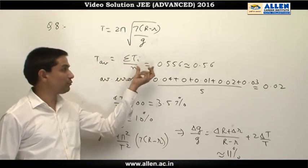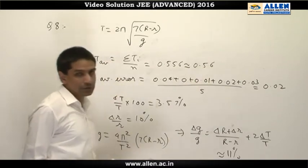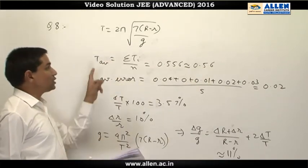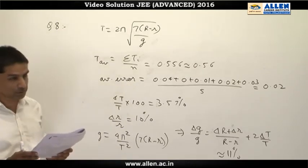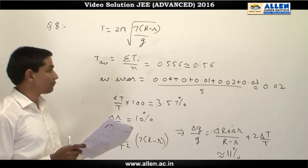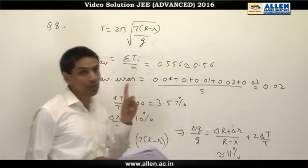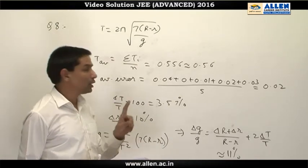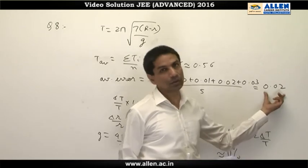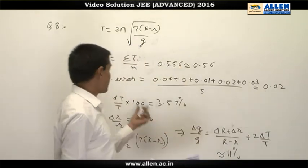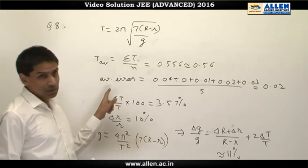We find out the average time period, which comes out to be 0.56 seconds. The error in each of the readings - 0.52, 0.56, 0.57, 0.54, and 0.59 - error in each reading is to be found. Taking the modulus of each of the errors and average of those modulus, we get the average error.